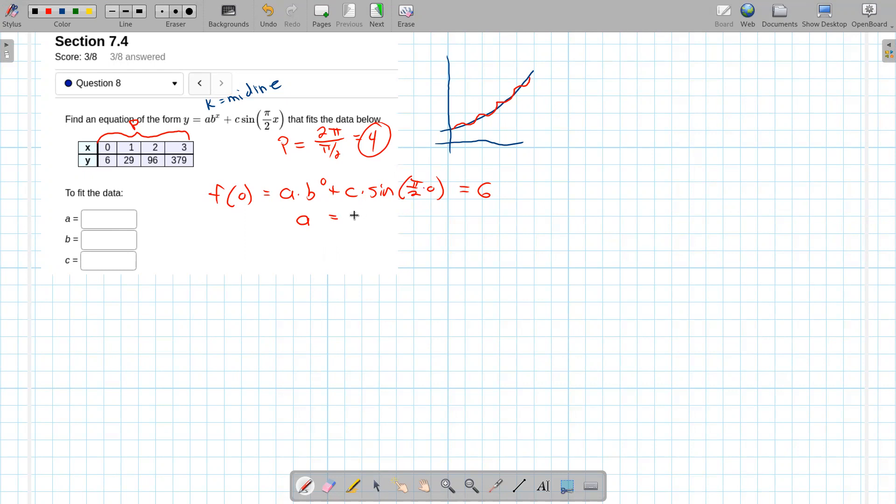Sine of 0 is 0. And so I get right away a equals 6. So this is going to start out with the exponential function's y-intercept there at 6. And then it's going to oscillate up in that exponential fashion there. And so we got to find these other values.